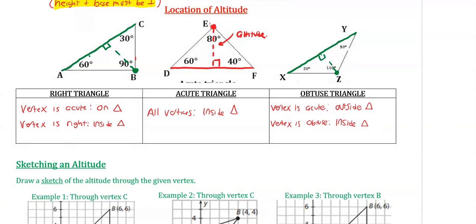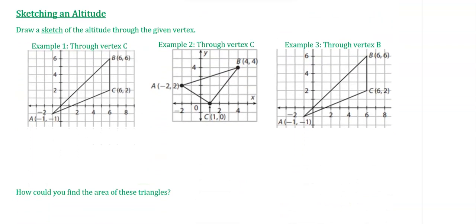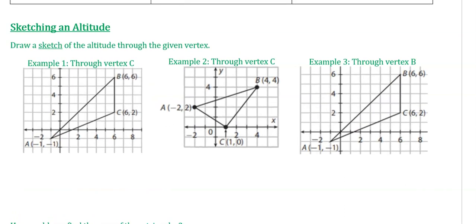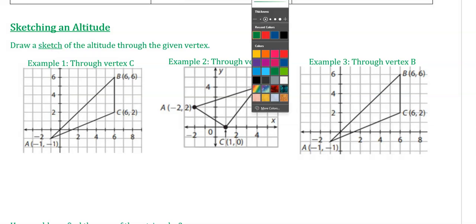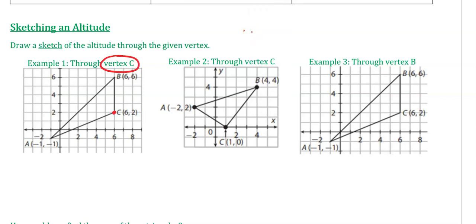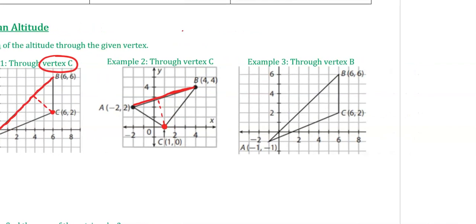Before we get to the coordinate plane, let's draw some sketches so we have an idea of what altitudes look like. Try examples 1, 2, and 3 — go through the specific vertex listed. Going through vertex C, we start there and connect with opposite side AB, so the altitude looks like that dotted line. On the second one, also going through vertex C, opposite side AB — that's the altitude again. For the last example, through vertex B, opposite side is AC, but we have to extend this side because the altitude must occur outside the triangle.